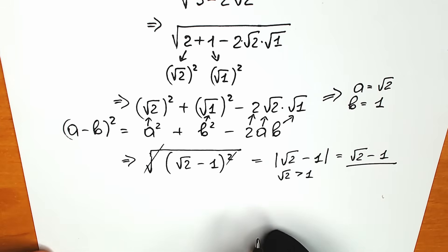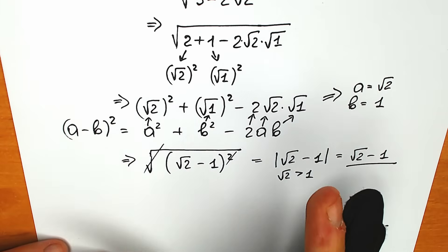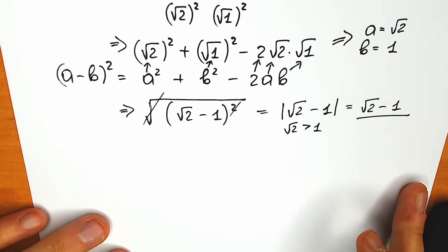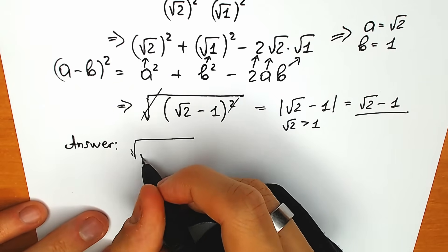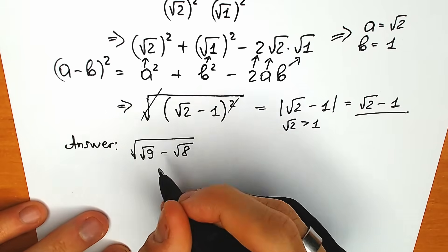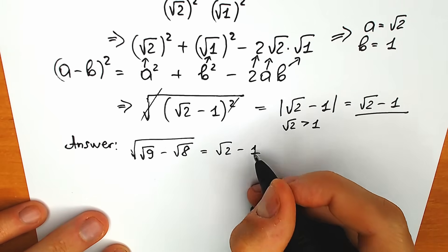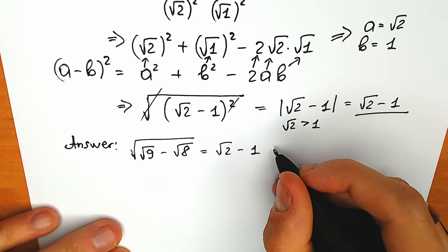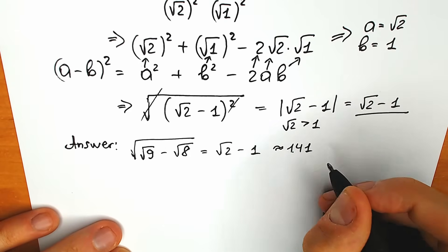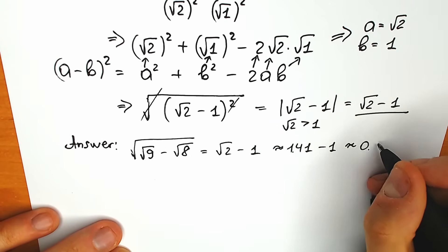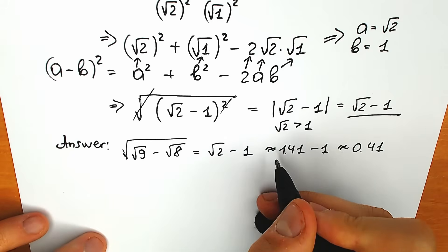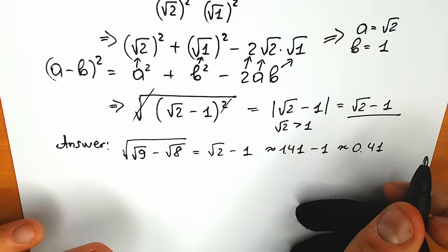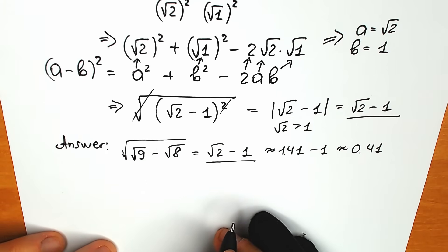As you can see, we have simplified this expression. Our final answer: square root of square root of 9 minus square root of 8 equals square root of 2 minus 1. If you're interested in an approximate answer — since square root of 2 is approximately 1.41 — we get 1.41 minus 1, which is approximately 0.41. But the final answer is square root of 2 minus 1.